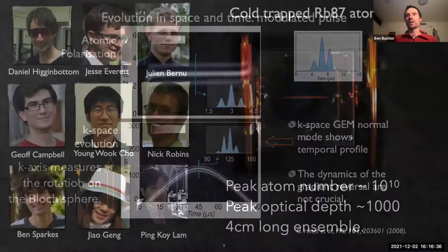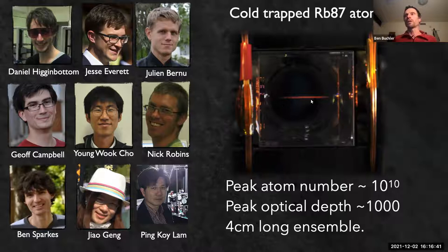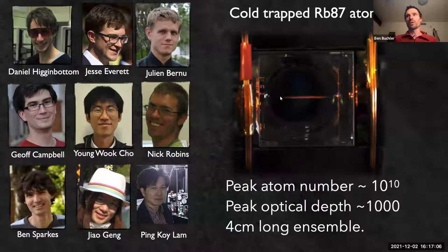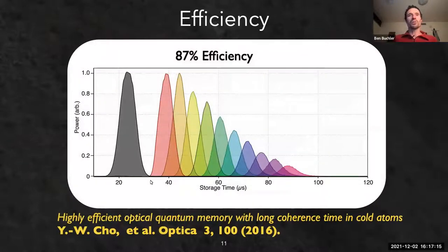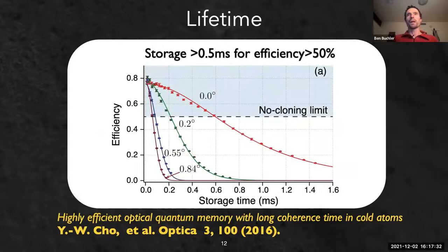The first experiments were done in a cold atomic system - a very long magneto-optic trap about four centimeters long, with around 10^10 atoms and a peak optical depth of around a thousand. This shows recall efficiency as a function of storage time: the gray is the input pulse, and we see progressively decaying recall efficiencies as storage time increases. The peak efficiency for short storage times is around 87 percent.